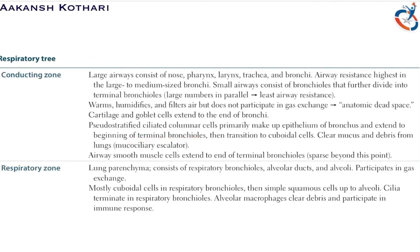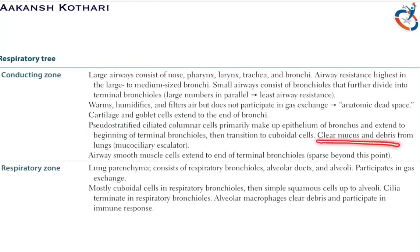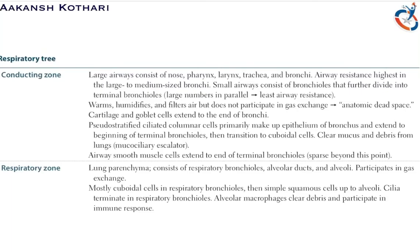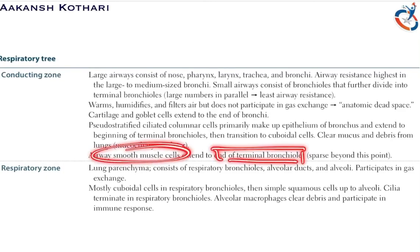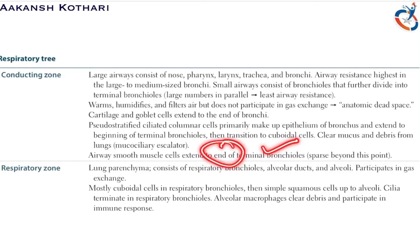After the terminal bronchioles, the epithelium transitions into cuboidal cells. The pseudostratified ciliated columnar cells clear mucus and debris from the lungs, forming the mucociliary escalator. The airway smooth muscle extends to the end of the terminal bronchioles, whereas the pseudostratified columnar epithelium is present only at the beginning of the terminal bronchioles.